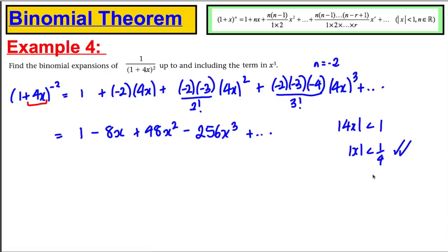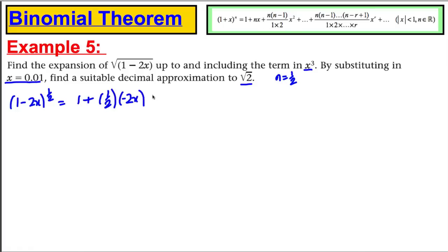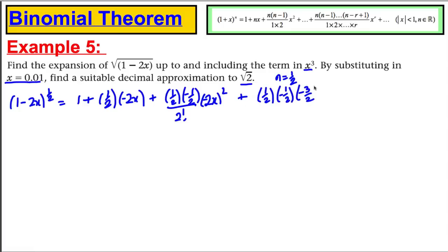Now an example using the Binomial Theorem to make an approximation. Find the expansion of √(1 − 2x) up to x³, then by substituting x = 0.01, find a suitable approximation to √2. Writing it as (1 − 2x)^(1/2), n is 1/2. Expanding: 1 plus (1/2)(−2x) plus (1/2)(−1/2) over 2! times (−2x)² plus (1/2)(−1/2)(−3/2) over 3! times (−2x)³ plus …